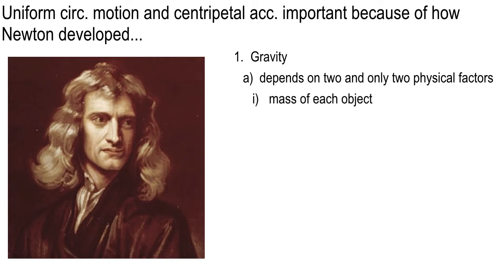He said, I think that this unusual law of gravitational force depends on two and only two physical factors. The mass of each object, so the mass of the Earth and the mass of the moon, the mass of the apple and the mass of the Earth, the mass of the sun and the mass of Jupiter, or whatever pair of gravitationally interacting objects you care to think of. The mass of each object is one of the two factors. And then the other one is their distance apart.